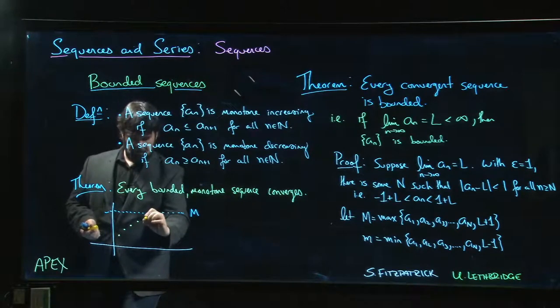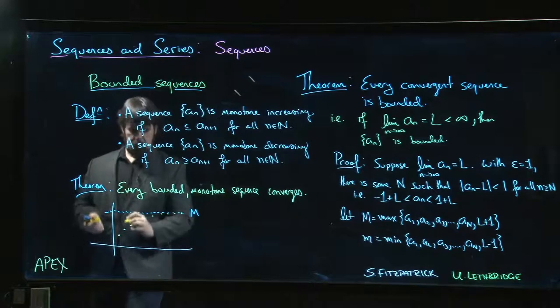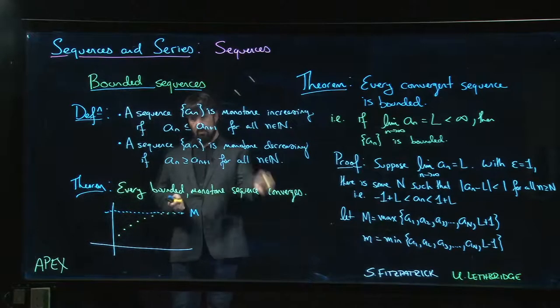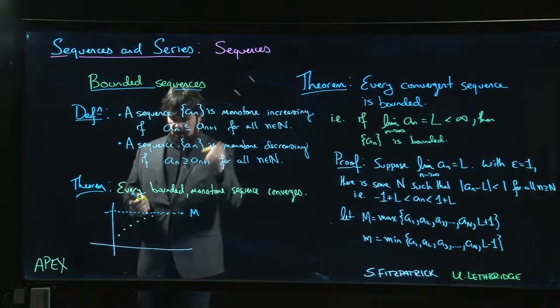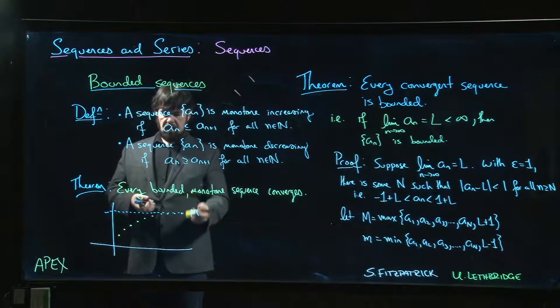But we can't pass M. Each term has to get bigger, but we can't get any bigger than M. We can't go back down because then we wouldn't be monotone increasing. We can't cross M because it's an upper bound.